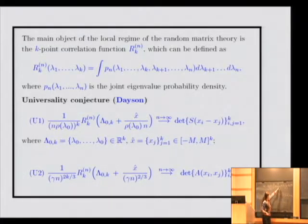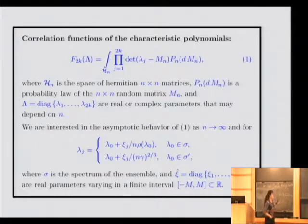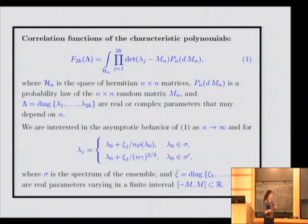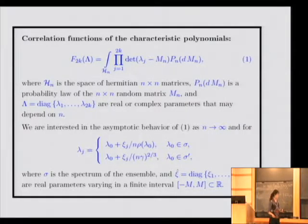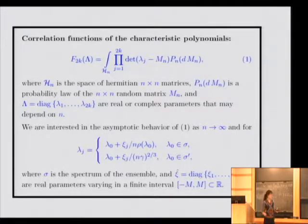This is the sine kernel. And if we speak about the edge of the spectrum, we obtain the determinant of the Airy kernel, which can be defined. Here A_i is the Airy function. We consider a different interesting case of universality: the characteristic function of the characteristic polynomials. It is defined by the following formula — we take the even product of determinants and take the average of this product. We are interested in the local behavior of this function when λ is near some point in the bulk or near the edge of the spectrum.